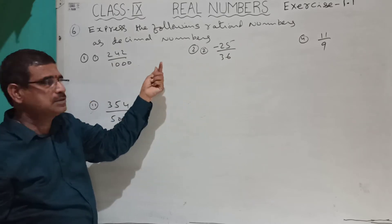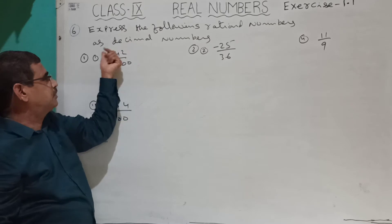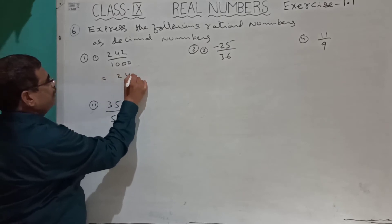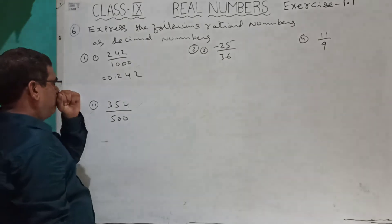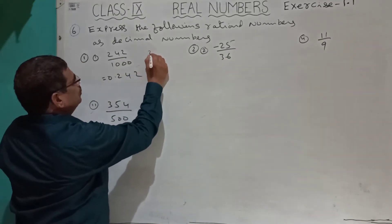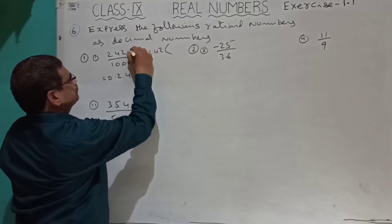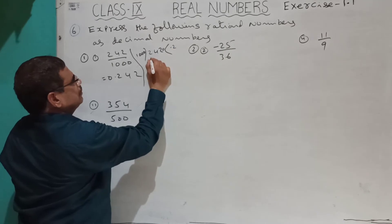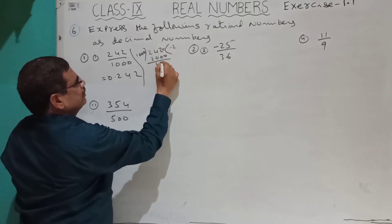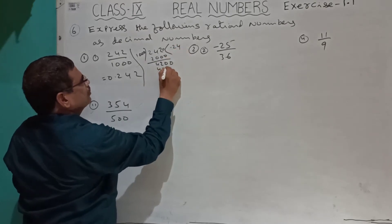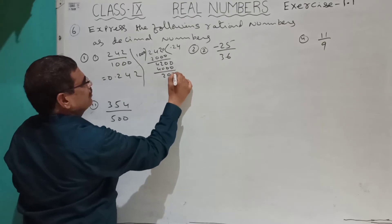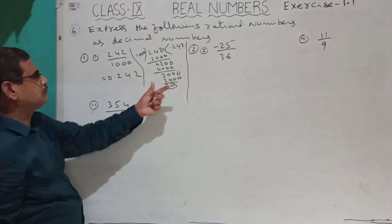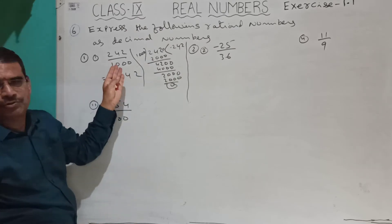In the denominator, only three zeros are there, so after three places put a decimal point. Therefore 242 by 1000 equals 0.242. You can also do the long division to verify: 242 divided by 1000 gives 0.242.